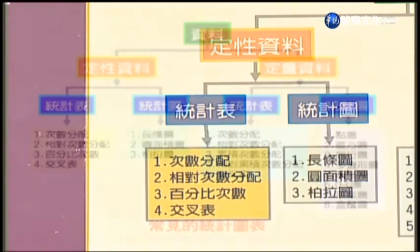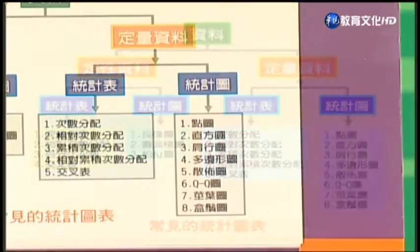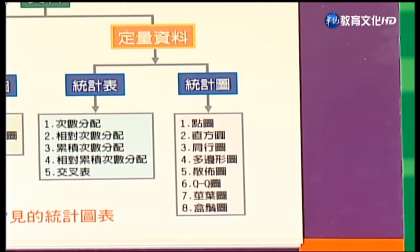圖的部分則是長條圖、圓面積圖跟柏拉圖。至於定量資料部分，在統計表方面有次數分配、相對次數分配及交叉表等等；在圖的部分有點圖、直方圖、莖形圖、多邊形圖、散步圖等等，這些都是常見的一些統計圖表。